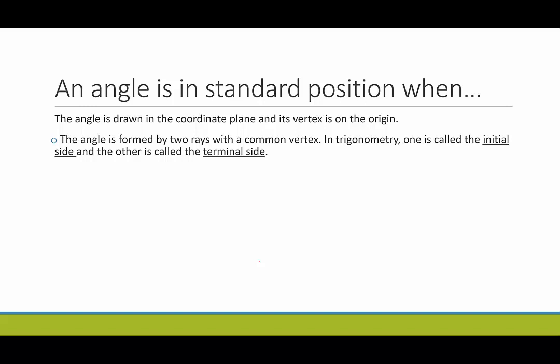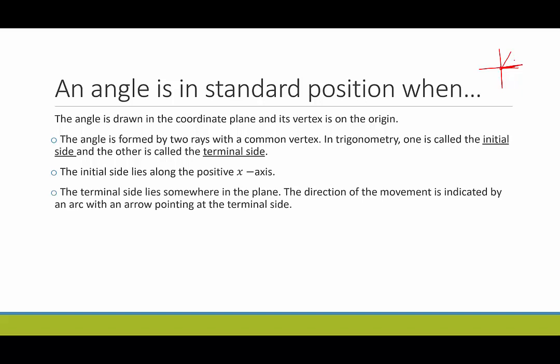In trigonometry, one side of the angle is called the initial side and the other is called the terminal side. We draw our coordinate plane, the vertex is right here, the initial side would be one ray and the terminal side would be the other ray. The initial side lies along the positive x-axis, starting at the origin going along the positive x-axis. The terminal side just lies somewhere in the plane.